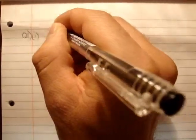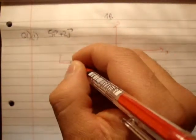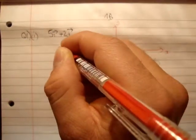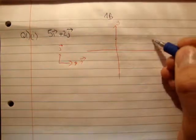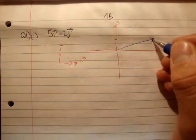So we have 5i hat plus 2j hat. In order to find its direction, there is y, there is x. Draw our unit vectors — that's i hat, and that is j hat. So we are 5 units on the i, the x dimension, and 2 units on the y, so it's about there somewhere. We drop our perpendicular.